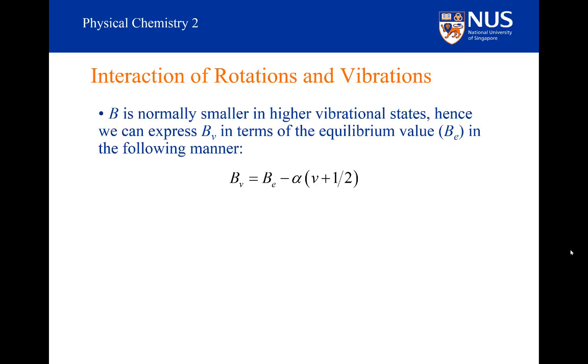This is an expression that relates the rotational constant in different vibrational levels. Notice that we have the subscript v to identify which vibrational level the rotational constant is associated with. So v could be equal to 0, 1, 2, etc. So we could have B₀, B₁, B₂, etc.